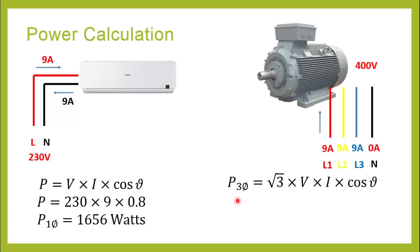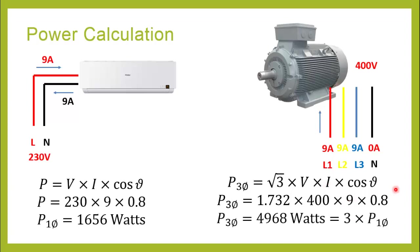For three-phase power, we use the three-phase formula. With line-to-line voltage of 400 volts, line current of 9 amperes, and power factor of 0.8, the total three-phase power is exactly three times the single-phase power. So even with the same amount of current in each conductor, the three-phase circuit carries three times the power compared to the single-phase circuit.